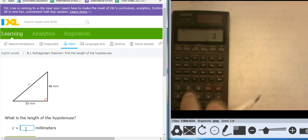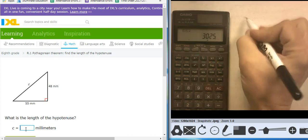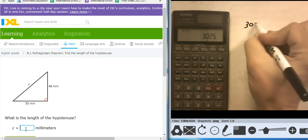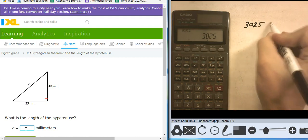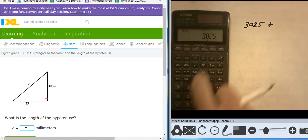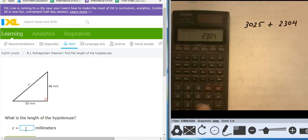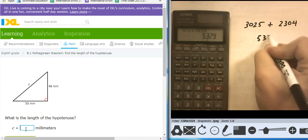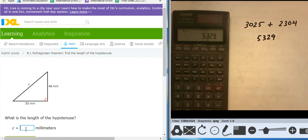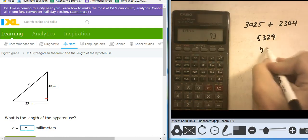So, 55 squared. 3,025. Plus 48 squared. 2,304. Add those together. Takes me to 5,329. Take the square root of that. Takes me to 73.